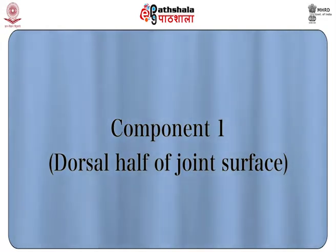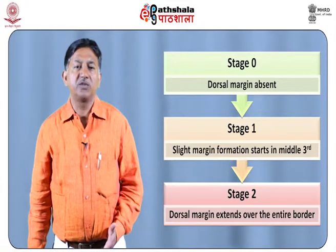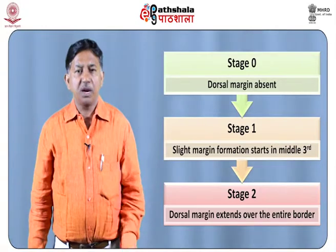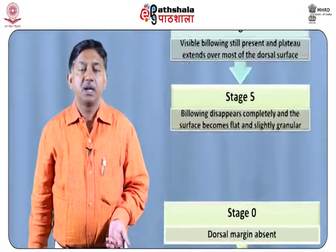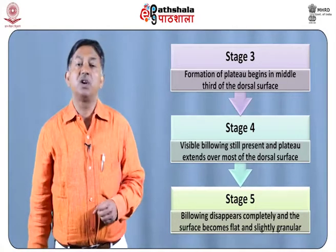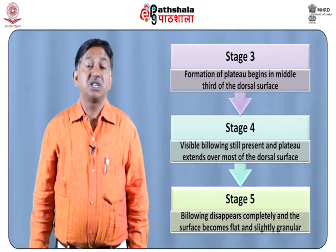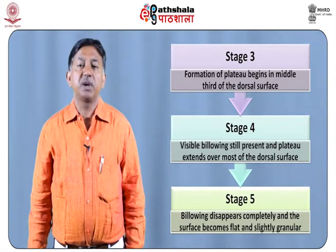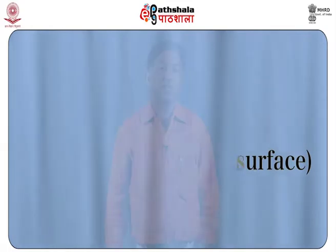Component 1 is observed on the dorsal half of the joint surface, with stages 0 to 5. Stage 0: dorsal margin absent. Stage 1: slight margin formation in the middle third. Stage 2: dorsal margin extends over the entire border. Stage 3: formation of a plateau — filling of grooves and resorption of ridges begins in the middle third of the dorsal surface. Stage 4: visible billowing still present, plateau extends over most of the dorsal surface. Stage 5: billowing disappears completely and the surface becomes flat and slightly granular.